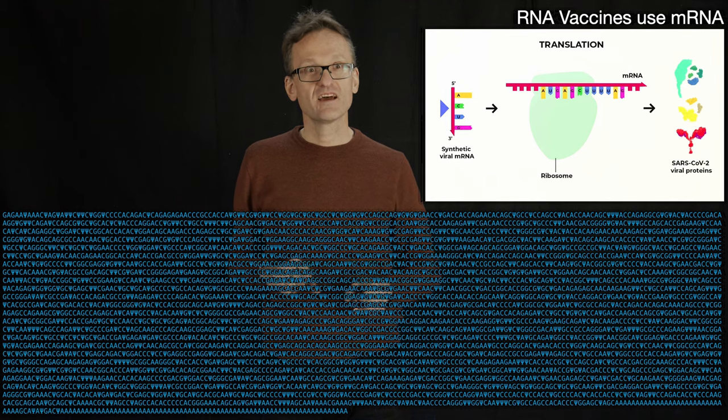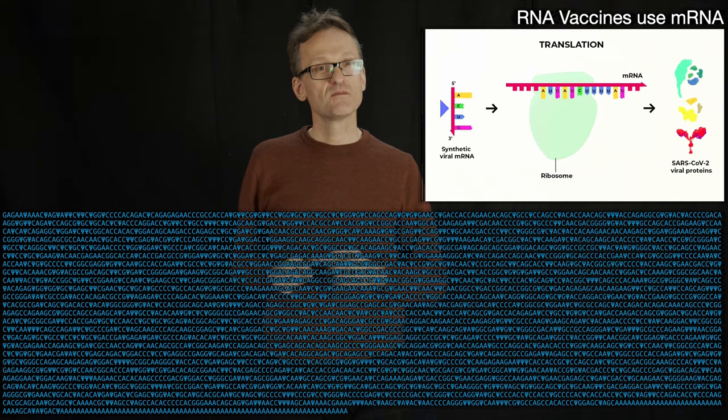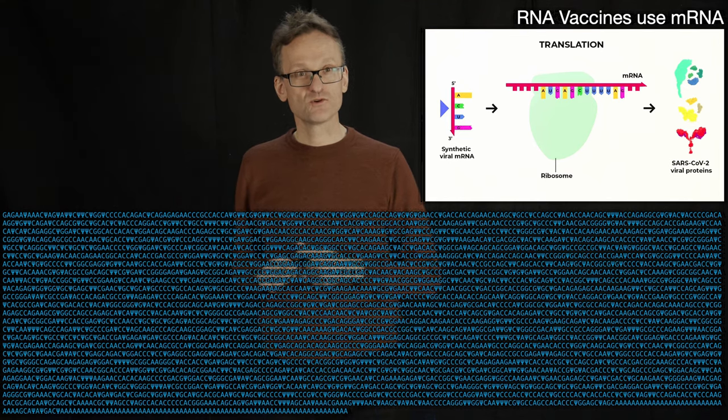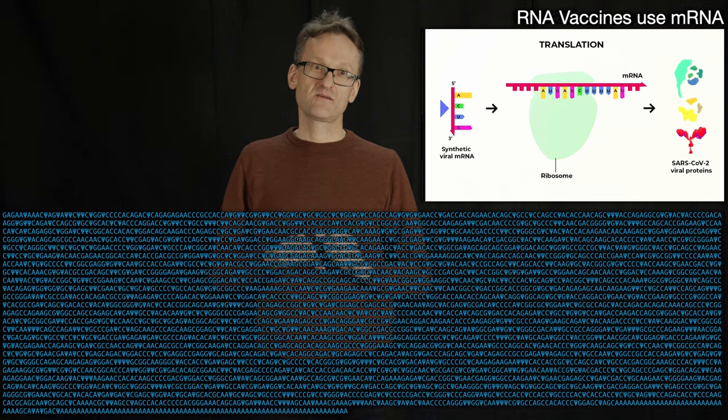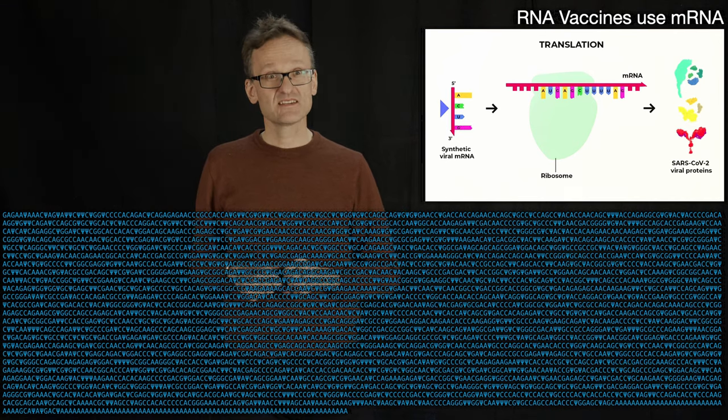It says A, G, C, and then Psi instead of U. Because Psi is this pseudo-uridine base. So it's a modified RNA nucleotide. Pretty amazing. I wouldn't have think that this text string would save humanity.